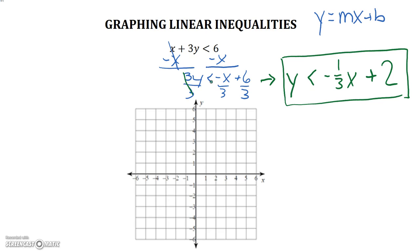So graphing this one, we have our y-intercept at 2 and our slope at negative 1 third. So we're going down 1 over 3, in the opposite direction as well. Now this inequality sign is just plain less than. It is not less than or equal to. So our line is going to be dotted.